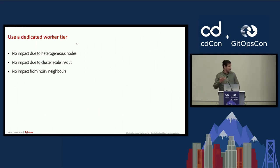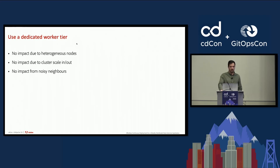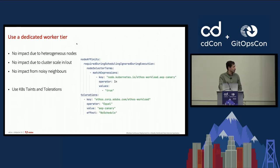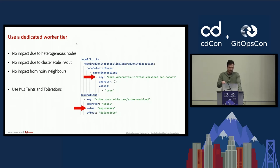Kubernetes abstracts away the infrastructure, but it may still impact your analysis. For example, if your cluster uses different types of nodes, they may yield different performance. You can also be impacted if your pods are evacuated mid-analysis due to a cluster scale-out, or simply by a noisy neighbor. To account for this, you should use dedicated worker tiers just for canary analysis, where nodes have a taint, and configure your pods with the appropriate tolerations and affinity rules to target those nodes.